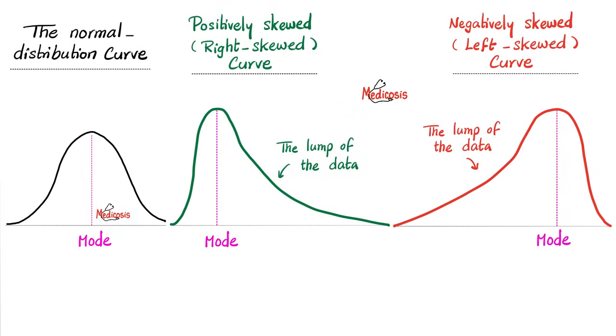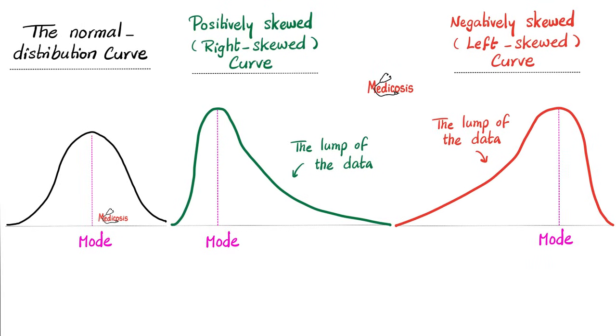So in a positively skewed curve, the lump of the data is towards the right, whereas in a negatively skewed curve, the lump of the data or the tail is to the left. So just look at the tail. If the tail to the right, it's right skewed. If the tail is to the left, it's left skewed.